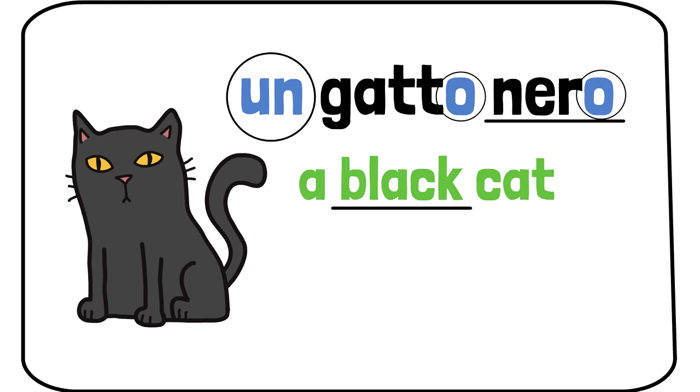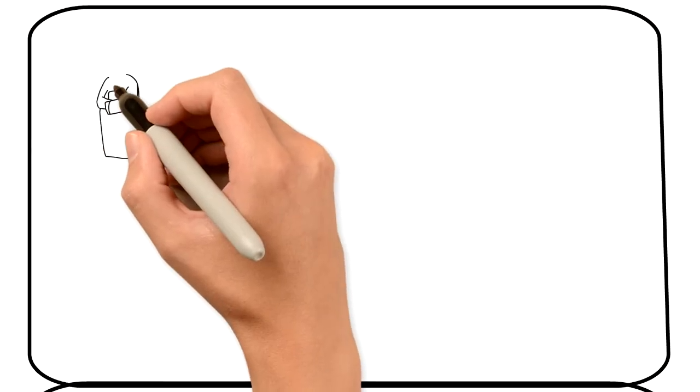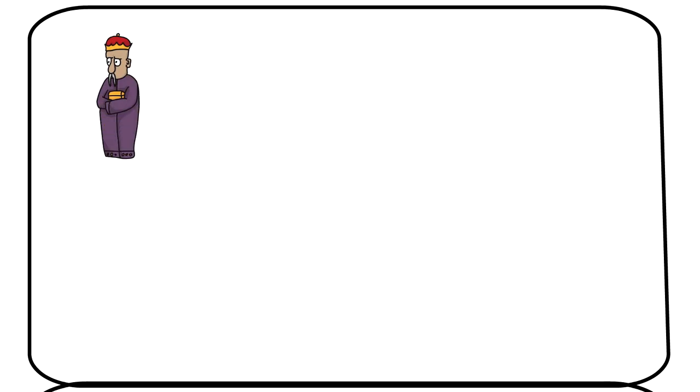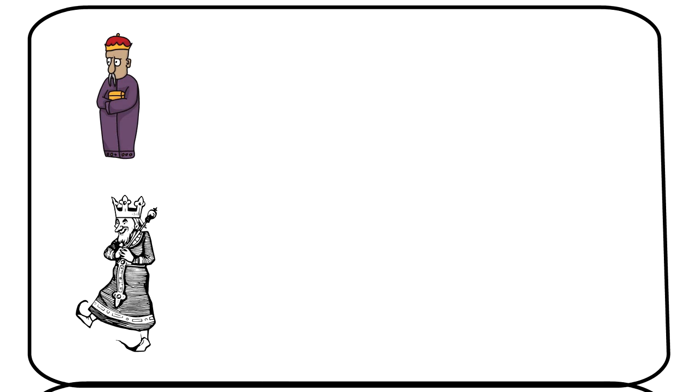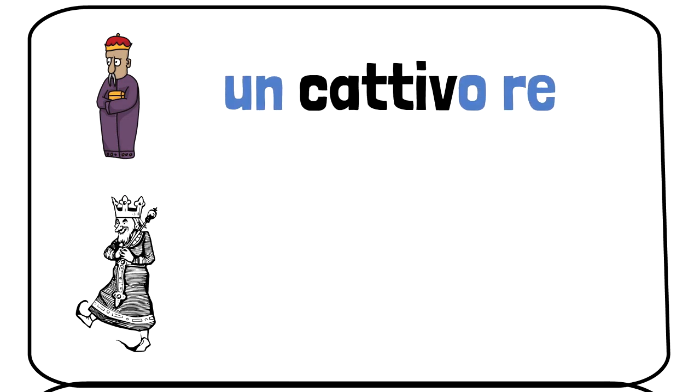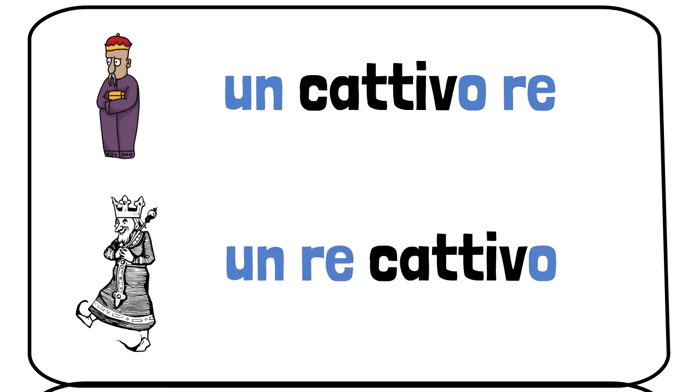Italian language has considerably less words than English, so often the meaning is conveyed through the structure of the sentences. So now we will look at those instances where we use the adjective before the noun, just like in English. When you do so, you change the meaning of the sentence.